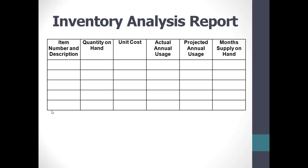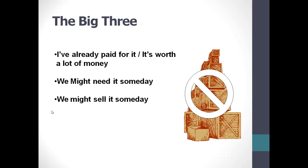The problem is that even identifying dead stock doesn't always immediately help you convince management that it has to go. When you say to upper management 'let's get this stuff out of here,' you're hit with the big three: 'I've already paid for it, it's worth a lot of money,' 'we might need it someday,' and my favorite — 'we might sell it someday.' And that last one always seems to be followed by 'and we'll make a lot of money.' Yeah, right — on all that stuff that's sitting out there with so much dust on it that people have played tic-tac-toe in the dust.